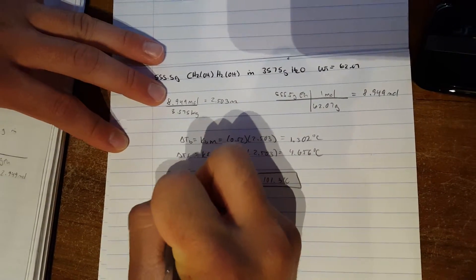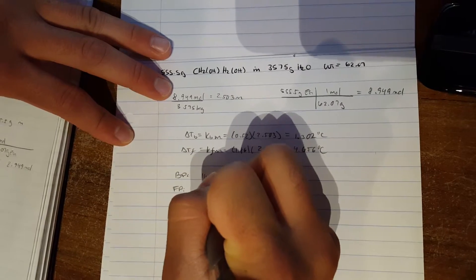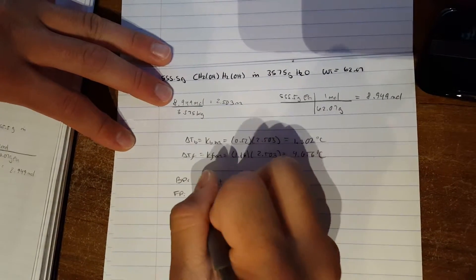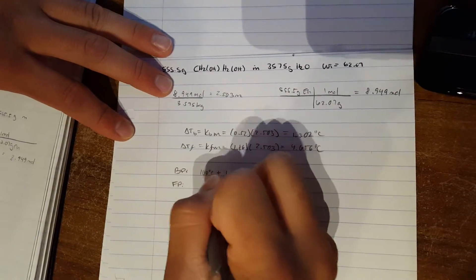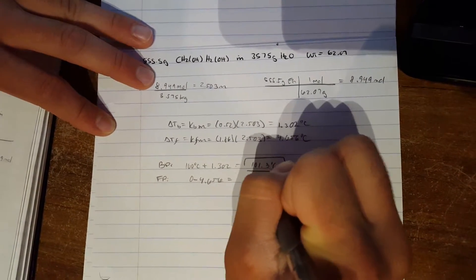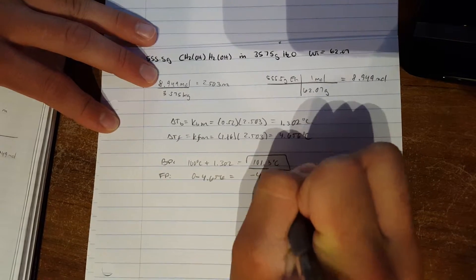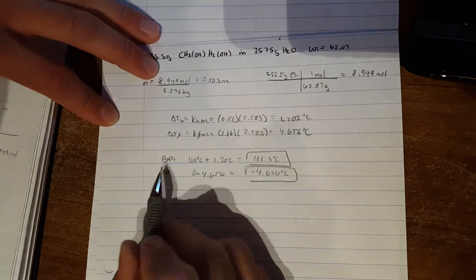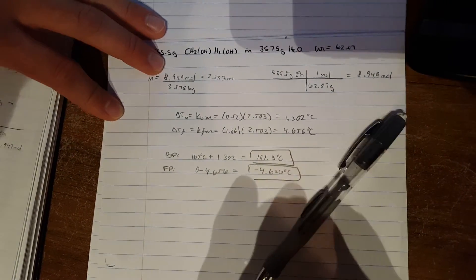And freezing point, we subtract from zero. These are the boiling point and freezing point.